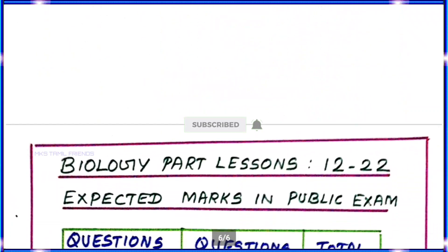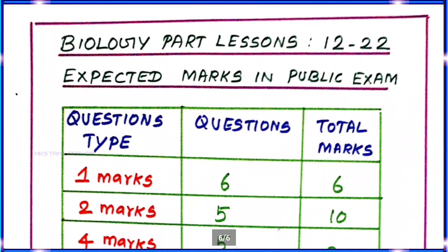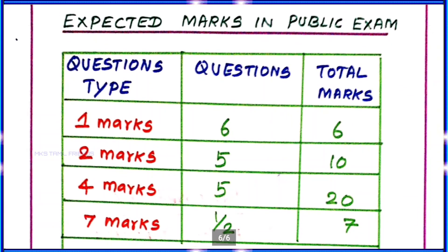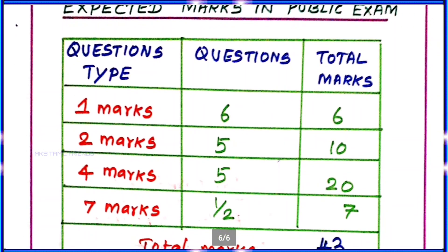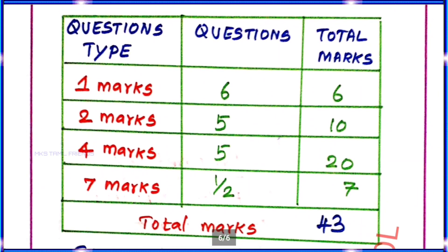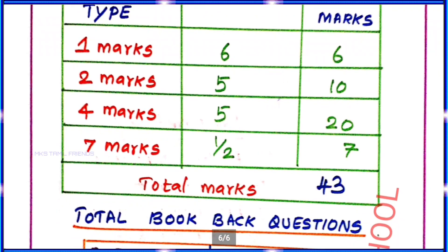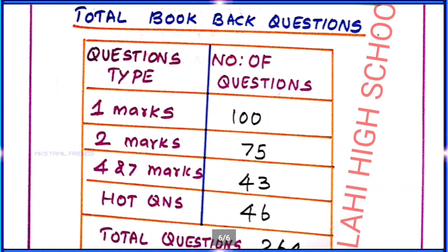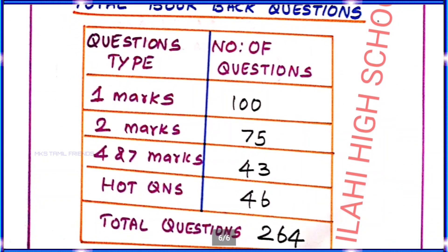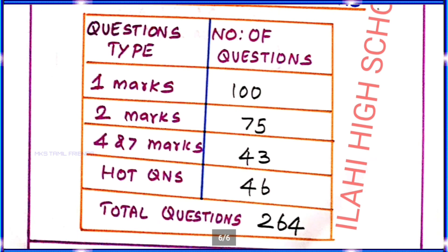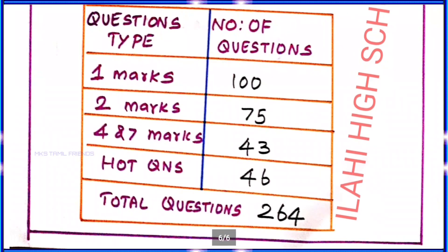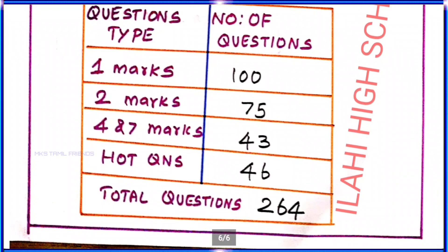Now for Biology. Question types: 1 Mark — 6 questions, total 60 marks. 2 Marks — 5 questions, total 10 marks. 4 Marks — 5 questions, total 20 marks. 7 Marks — 1.5 questions, total 43 marks. The total book question pool for Biology is 264. It's easy — just 1 mark.